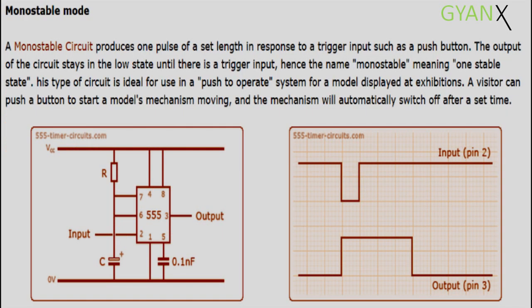Next we have the monostable mode. A monostable circuit produces one pulse of a set length in response to a trigger input, such as a push button.